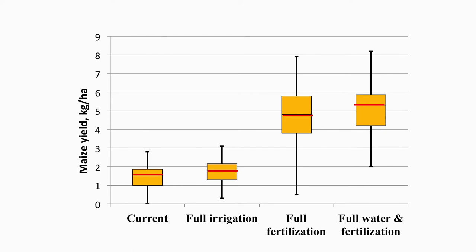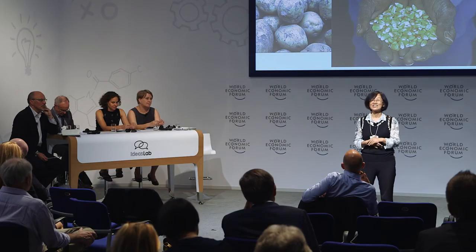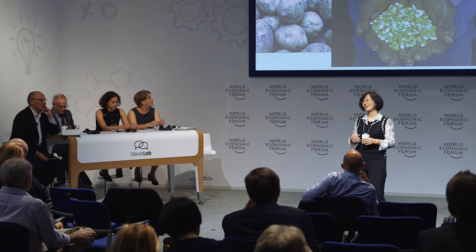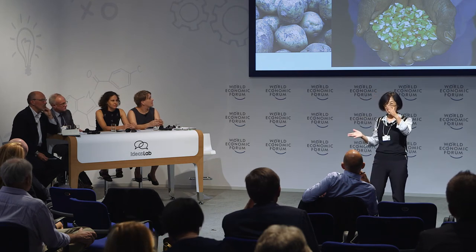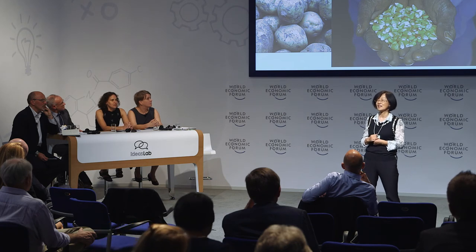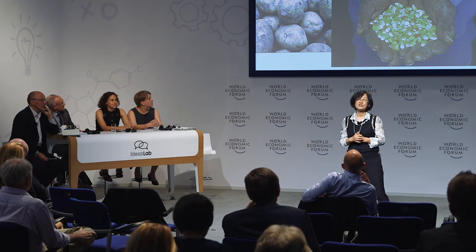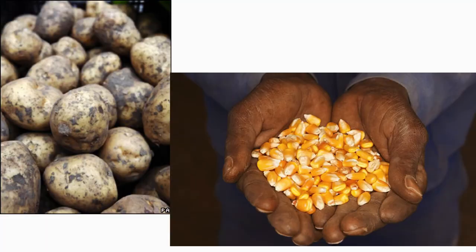The third bar shows when we increase the fertilizer supply to meet the demand of crops, and you can see the yield jumps by a big margin. But the range is still very large, meaning the yield is unstable. The last bar shows that yield becomes stable with both sufficient water supply and sufficient fertilization.